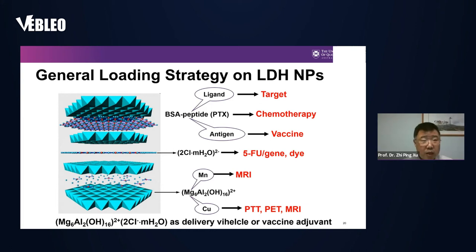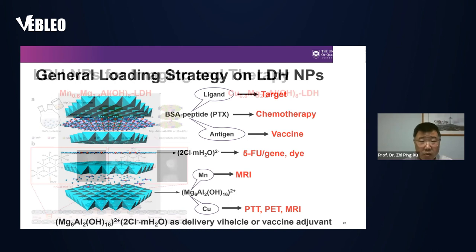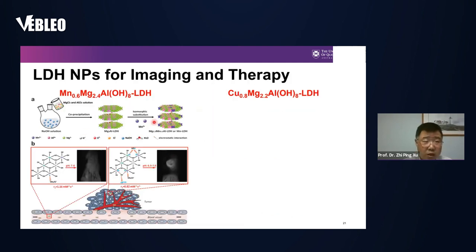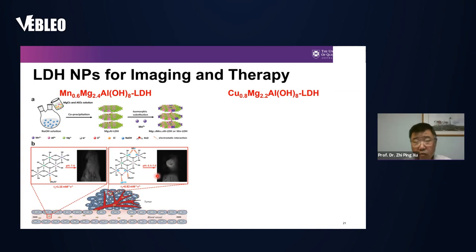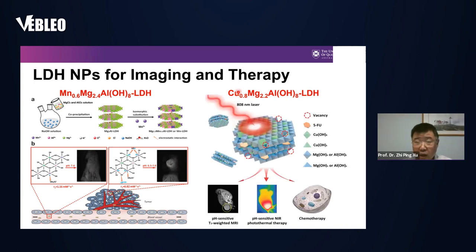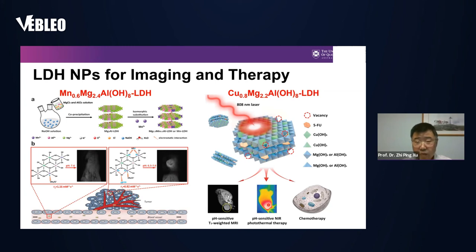We synthesized manganese-containing and copper-containing LDH nanoparticles easily in the lab. Very interestingly, these particles do not show up in normal tissues but do show up in tumor tissues in MRI imaging. The manganese-LDH shows very efficient tumor-selective MRI contrast. We also used copper with structural defects to enhance photothermal conversion for photothermal therapy — these particles efficiently convert near-infrared light to heat to treat tumors.